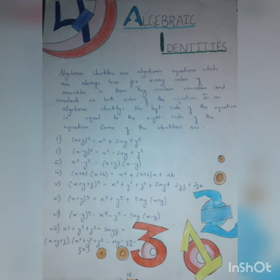And then comes Algebraic Identities. Algebraic Identities are algebraic equations which are always true for every value of variable in them. There are eight types of identities and I have written them here.